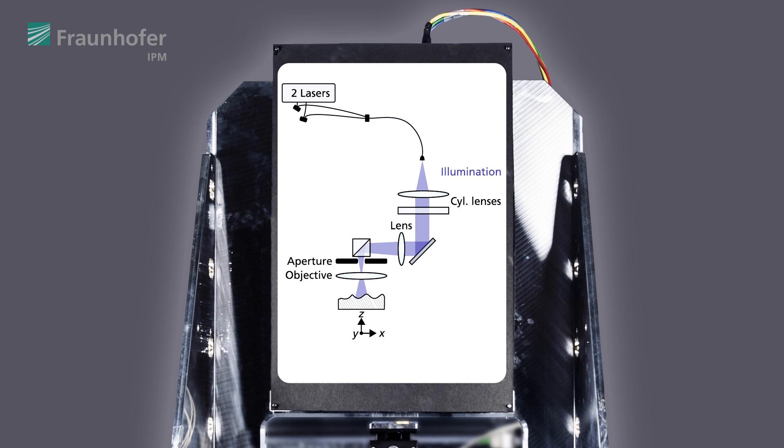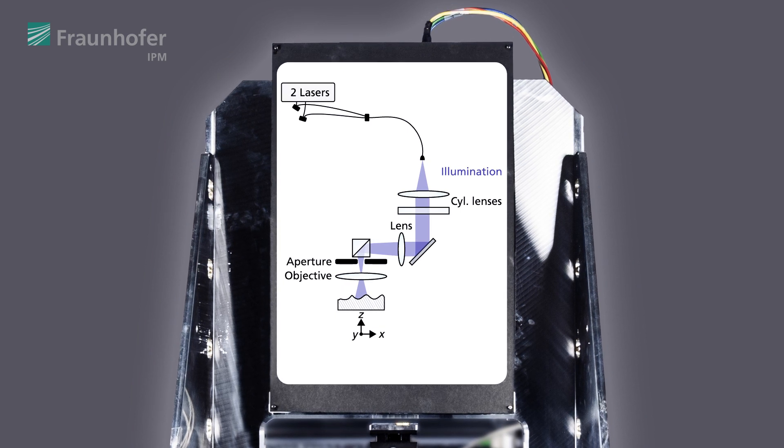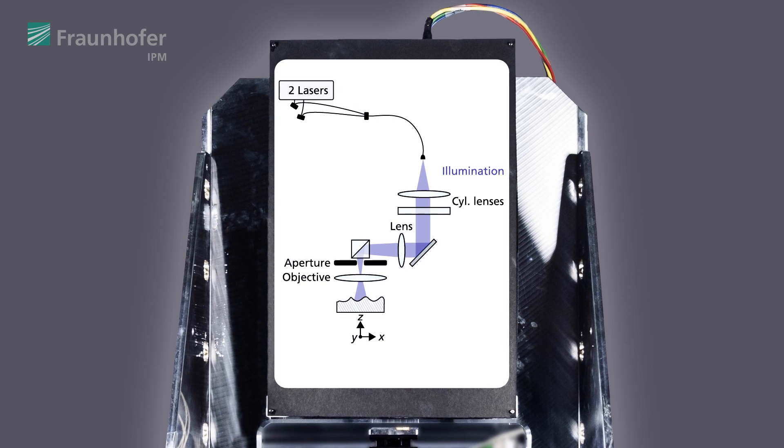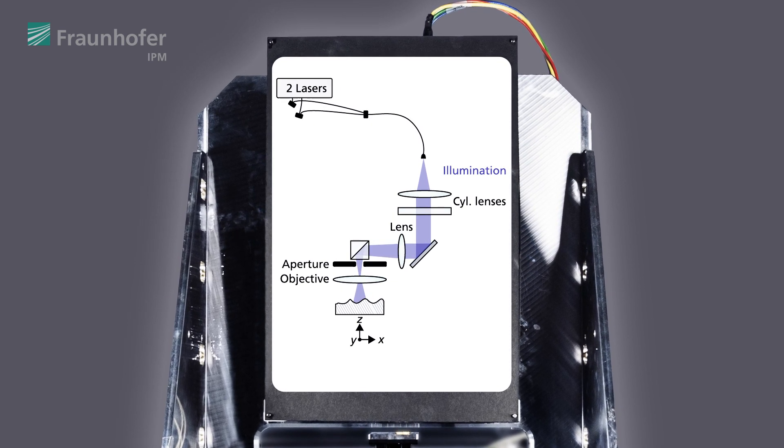The light is coupled into fibers and split by fiber-based beam splitters into object and reference beam. In the object beam, two cylindrical lenses shape the beam into a line to have higher illumination power and thus shorter exposure times.